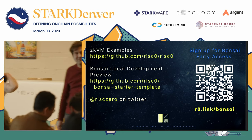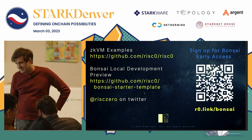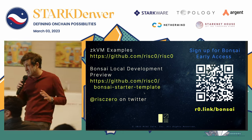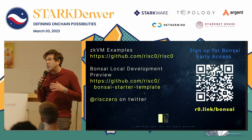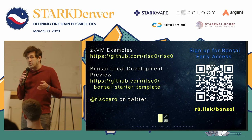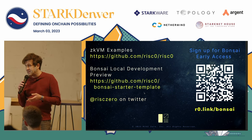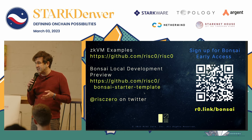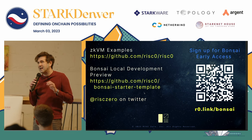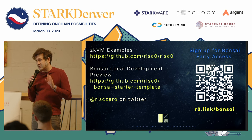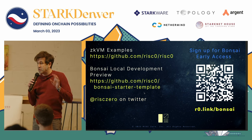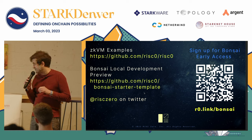Question: is this specific to StarkNet, or do you expect to expand to other networks? We intend to publish our proofs to multiple different chains. We are choosing to focus early on StarkNet, Ethereum, and potentially NEAR. The technical complexity involves building the proxy contracts for each chain, as well as getting the verifier to run on the appropriate chain.